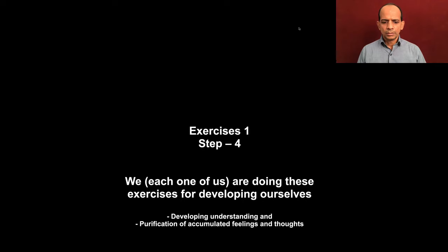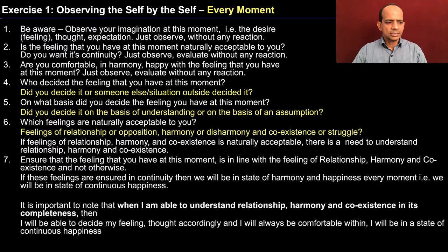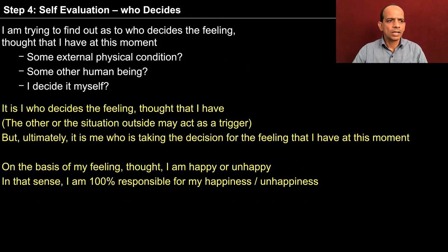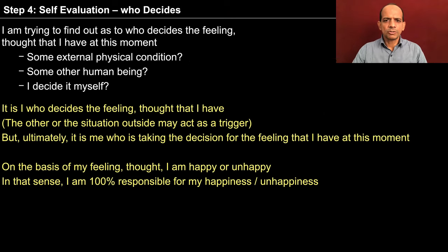Now we will go one step ahead to discuss step 4. These are the 7 steps which we are discussing one by one. And gradually we have to develop the awareness to such an extent that we are able to be observant every moment. So in step 4, we are again doing the self-evaluation and we are trying to find out who is deciding our feeling.